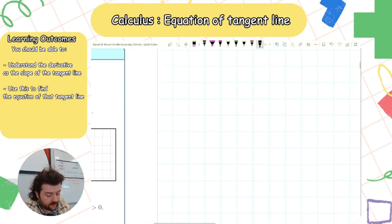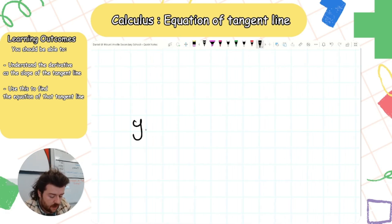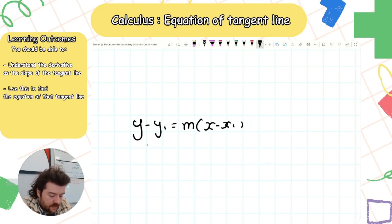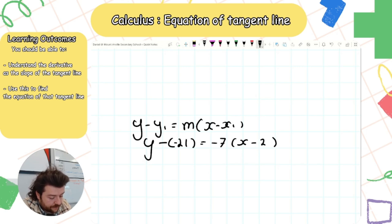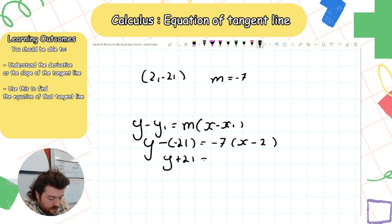So my point is (2, −21) and my slope is −7. Using the line formula: y + 21 = −7(x − 2), giving the equation of the tangent line.